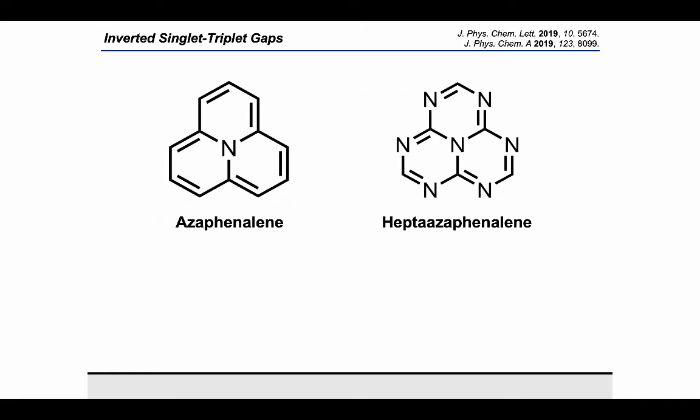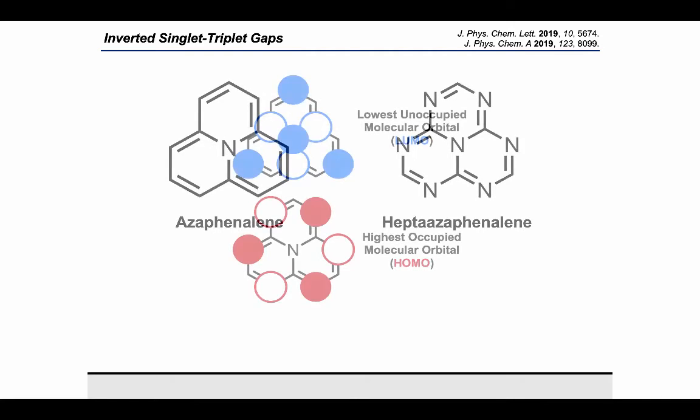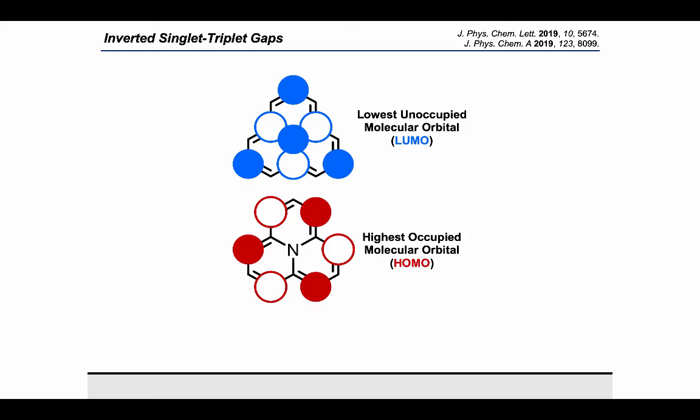Recently, two azaphenalenes were studied in great detail and were found to have an inverted singlet-triplet gap. It is caused by a combination of two effects. First, HOMO and LUMO have completely disjoint orbitals, leading to a negligible orbital overlap and a very small exchange integral, which directly translates into a very small singlet-triplet gap.